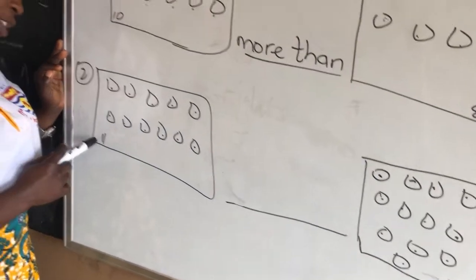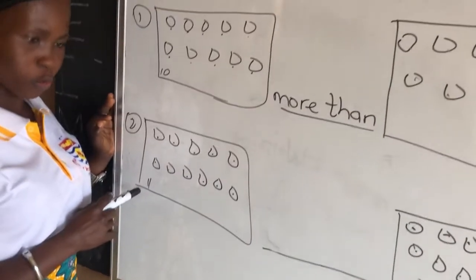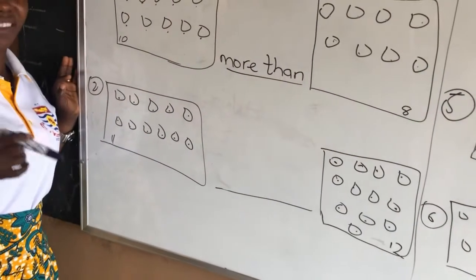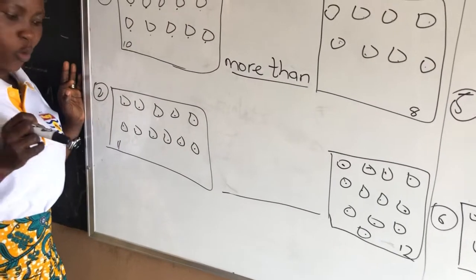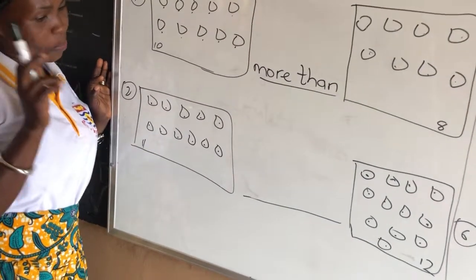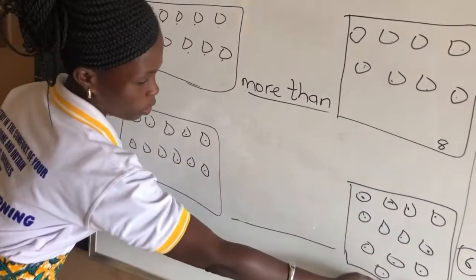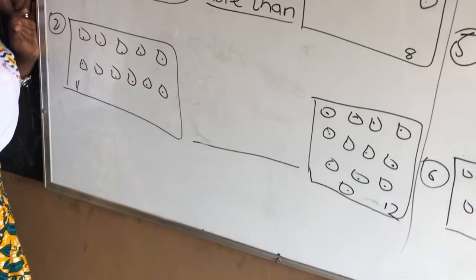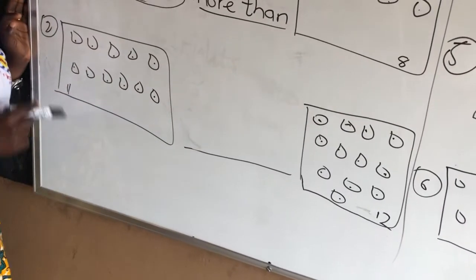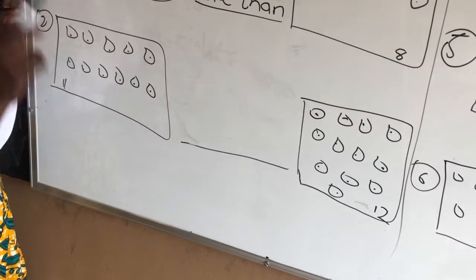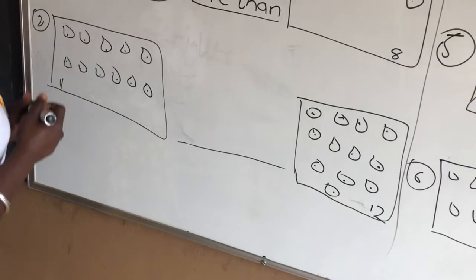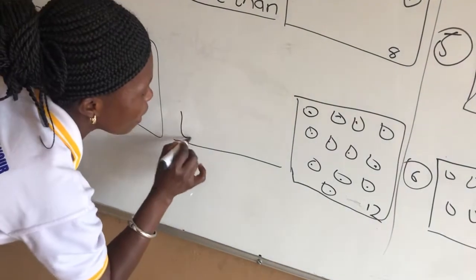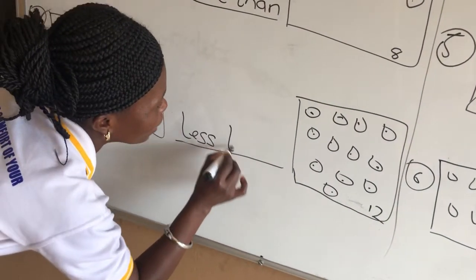You can't say 11 is small on its own. Between 12 and 11, which one is small? 11. Which one is big? 12. So 11 is less than — 11 is smaller than 12. So you write: less than.